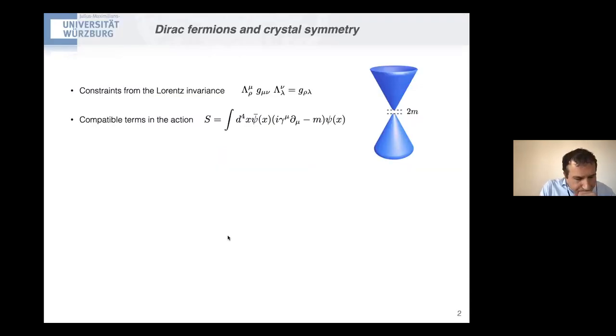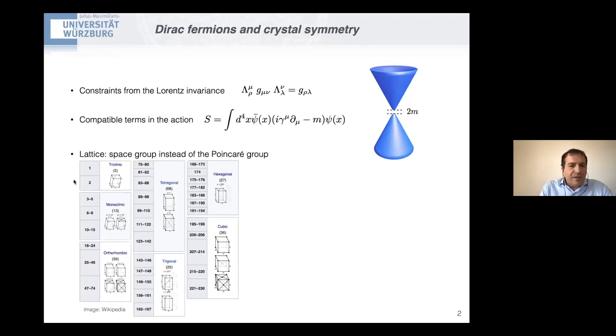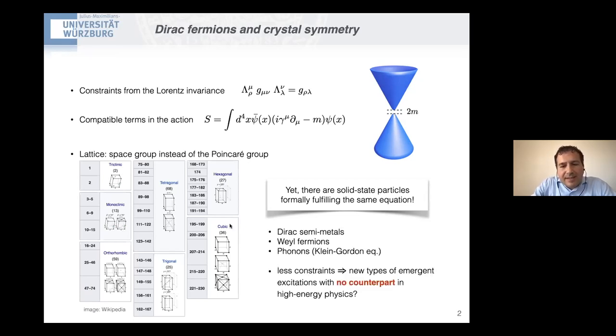So as a consequence of the Lorentz invariance, if you are not in a solid, your electron will obey the Dirac equation. However, on a lattice, we in some sense have much more freedom because we have to fulfill the lattice symmetries rather than the Poincare group. And we have, nevertheless, even though the Lorentz is therefore broken, we have particles that fulfill a formally similar equation. So you all know Dirac semi-metals and Weyl fermions. So in some sense, we have less constraint to fulfill, and we can hope that this way we can enlarge the zoo of excitations and find something that has no counterpart in high energy physics.